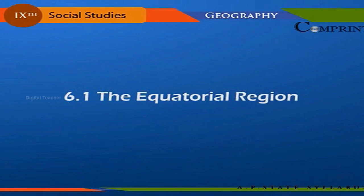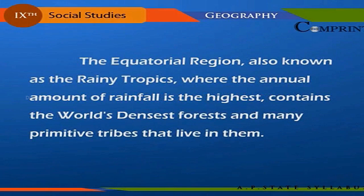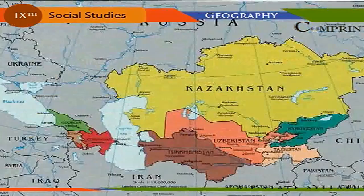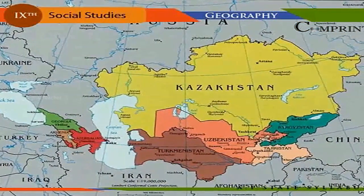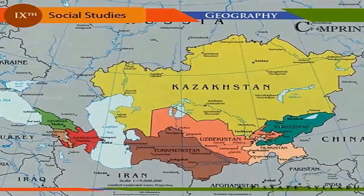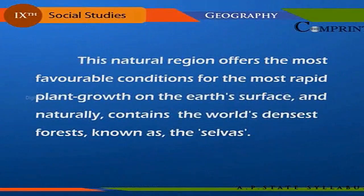The equatorial region, also known as the rainy tropics, is where the annual amount of rainfall is the highest. It contains the world's densest forests, and many primitive tribes live in them. A belt of low pressure called the doldrums, or the belt of equatorial calms, encircles the earth near the equator. This natural region offers the most favorable conditions for the most rapid plant growth on the Earth's surface and naturally contains the world's densest forests, called the selvas.